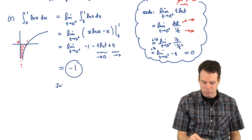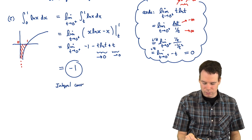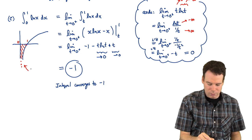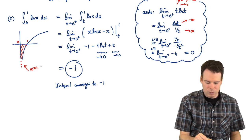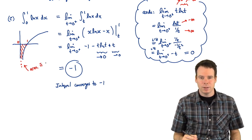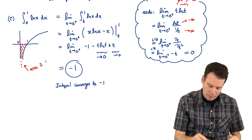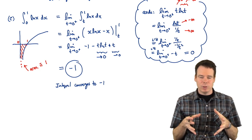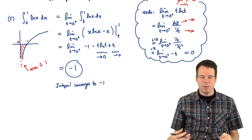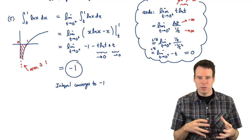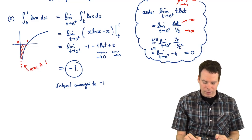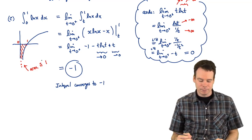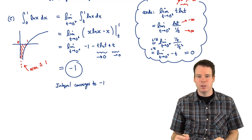So both of those terms go to 0, and our limiting value is negative 1. Therefore the integral from 0 to 1 of ln(x) dx converges to negative 1. The area of this unbounded region is the absolute value, which is 1. Remember, area is always a positive quantity — integrals can be positive or negative depending on where the region sits in the plane, but the area is the absolute value of the integral. So the area of this unbounded region is 1.